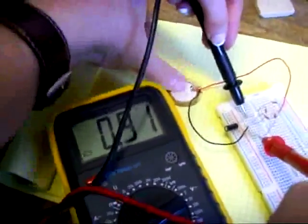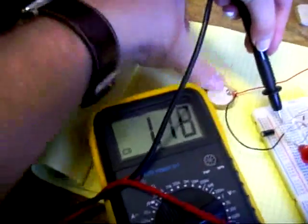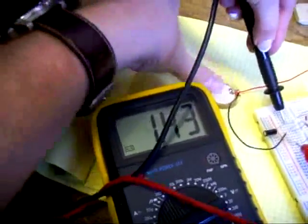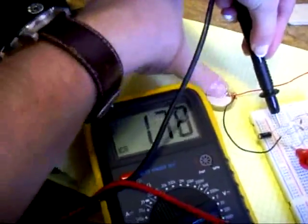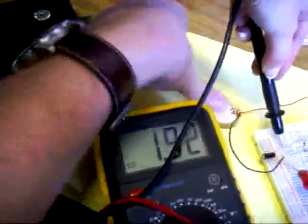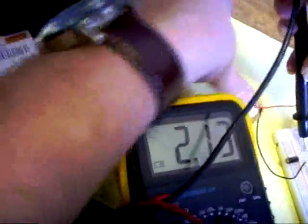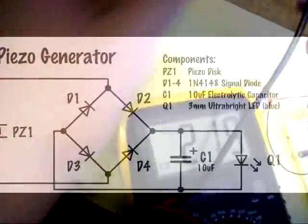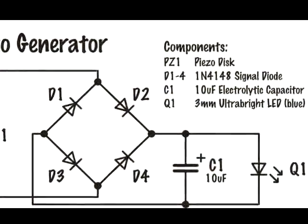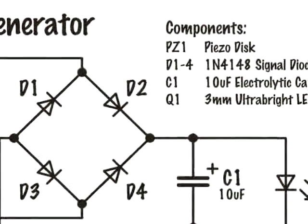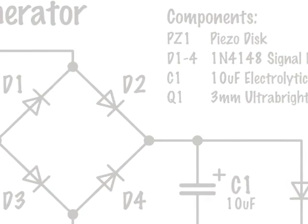And in this clip you can see we have a multimeter connected to the circuit, measuring the voltage. As we tap the piezo, it charges up the capacitor, and you can see the voltage level building up. So that's how you can use the piezoelectric effect to generate a useful DC current.